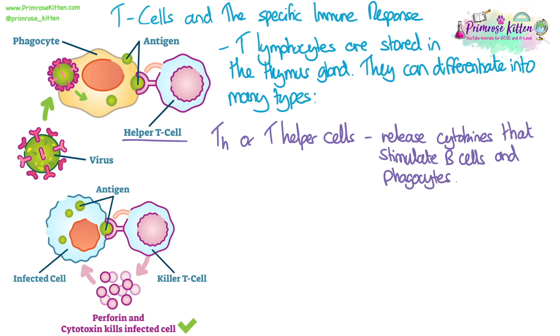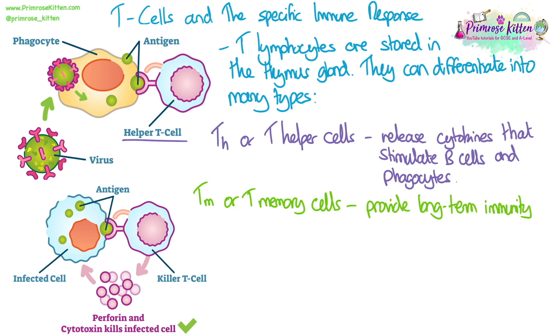T helper cells release cytokines, which are a type of cell-signalling molecule, and they stimulate B cells and phagocytes. T memory, or TM cells, help to provide long-term immunity.